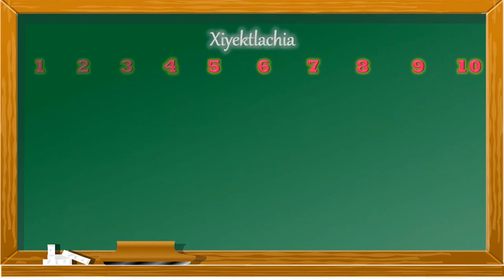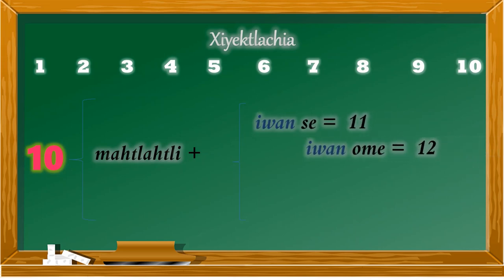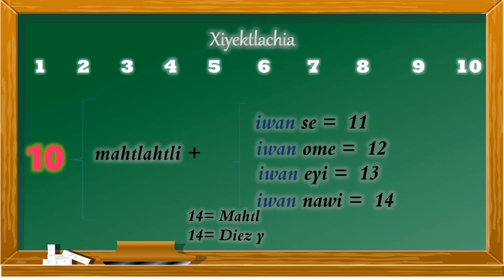Observa: los números del 1 al 10 tienen sus nombres propios. A partir del 10 se toman conformaciones usando los 4 primeros números de la numeración náhuatl. Es decir, para conformar el 11 tomamos matlaklikuance, para el 12 matlaklikuanome, para el 13 matlaklikuaneyi, y para el 14 matlaklikuanaui.